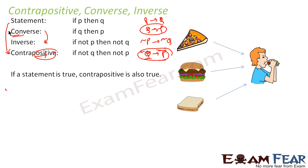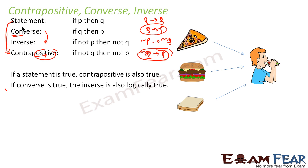Also, if the statement is true, then the contrapositive is also true — the statement and contrapositive are the same. And if the converse is true, then the inverse is also logically true — so the inverse and converse are the same. If you have a statement and you find the contrapositive, it has the same logical value.